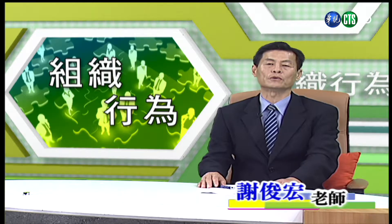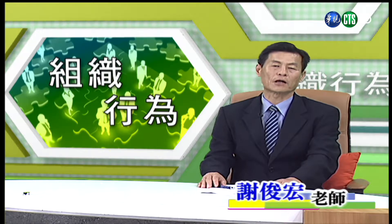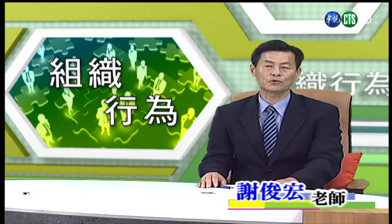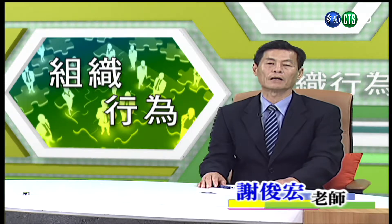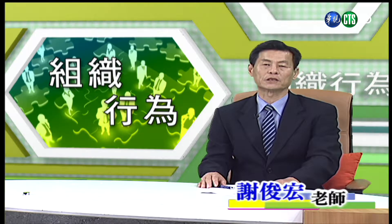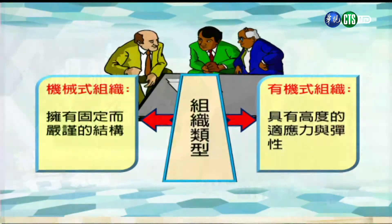管理者应该将组织朝向调整为更精简、更快速、更具弹性。而有机式的组织正好符合组织设计的未来趋势。介绍完组织设计的权变因素，接着来介绍在权变因素考量下，有哪两种组织结构形态？通常分为两项：一是拥有固定而严谨结构的机械式组织，二是具备高度适应力与弹性的有机式组织。